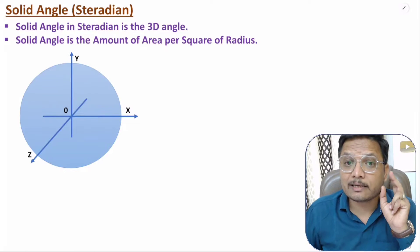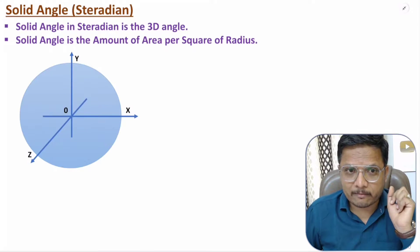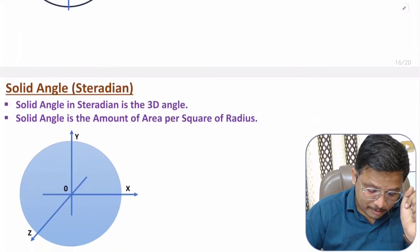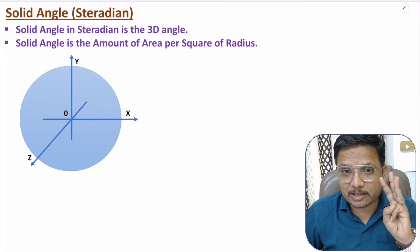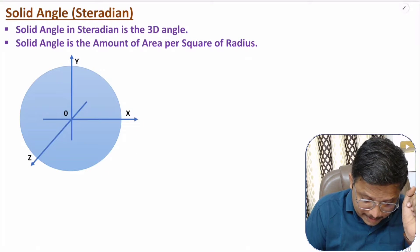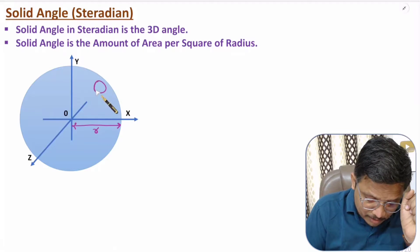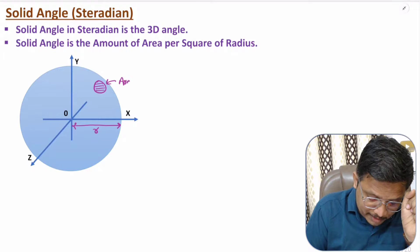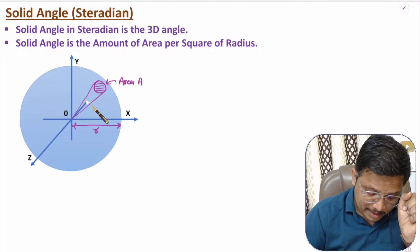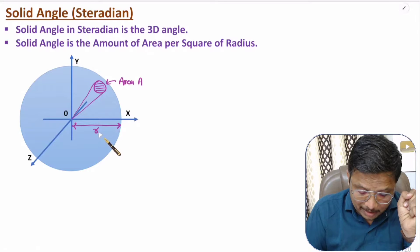Now I'll explain solid angle. Solid angle is a three-dimensional angle, and we measure it in form of steradian. To understand solid angle, consider a sphere as a three-dimensional structure. With this sphere, if the radius is r and we have an area A on the surface, then the three-dimensional angle — the solid angle — can be calculated as area divided by the square of the radius.